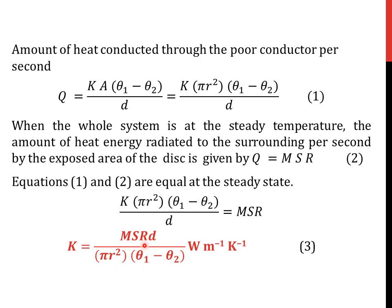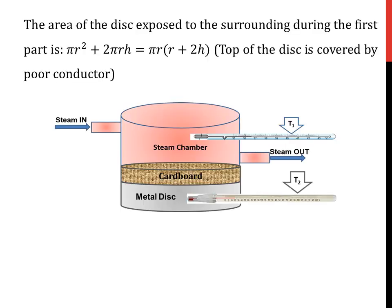In this expression 3, R, the rate of cooling, is unknown and we must determine it experimentally. In finding the rate of cooling, we measure the area of the disc exposed to the surroundings at different instances. During the first part of the experiment, when the steam chamber, cardboard, and metal disc are placed one on top of the other, the surface area of the metal disc which is exposed is the bottom circular area and the cylindrical surface area alone. Therefore, the area corresponding to this is πr² + 2πrh, which simplifies to πr(r + 2h).